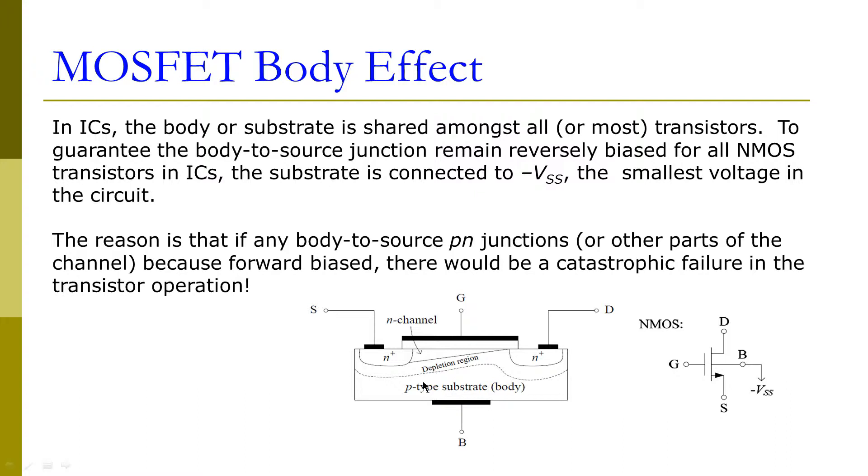The body is P-type material, and the source and drain are both heavily doped N-type material, forming two junctions here. These two PN junctions form a depletion region that helps the transistor operate. If we have any forward bias on this PN junction, it will cause huge current leakage, resulting in catastrophic failure in transistor operation.